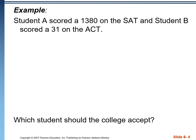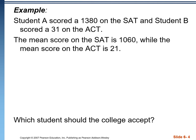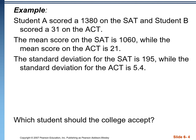Let's go back to the example. We have two students and their test scores. We know the mean score of each test and the standard deviation: the standard deviation for the SAT is 195, and for the ACT it is 5.4. Now we can calculate a z-score for each student. For student A: (1380 − 1060) / 195, which gives a z-score of 1.64.